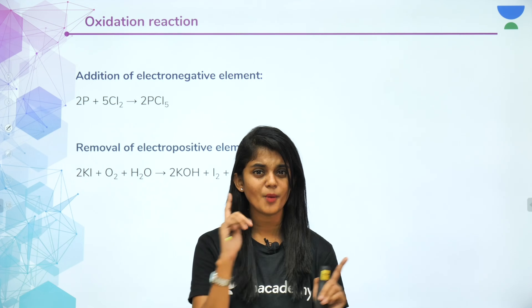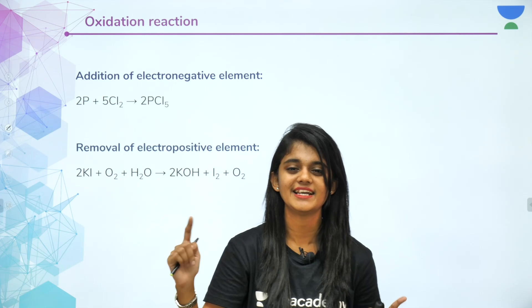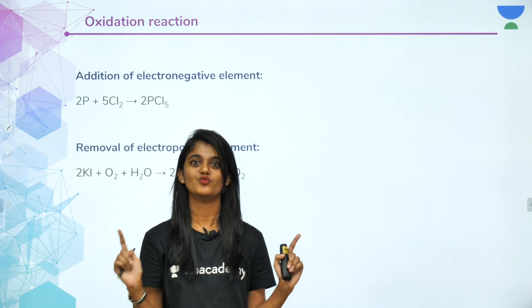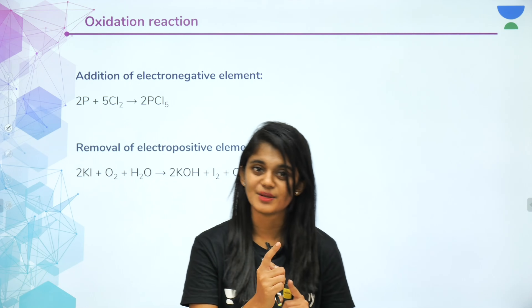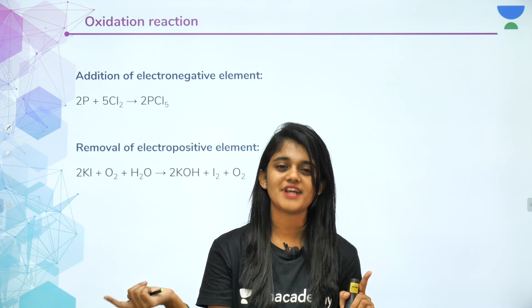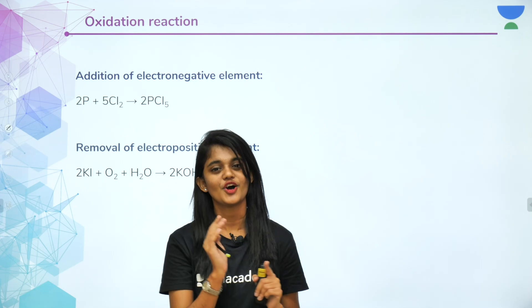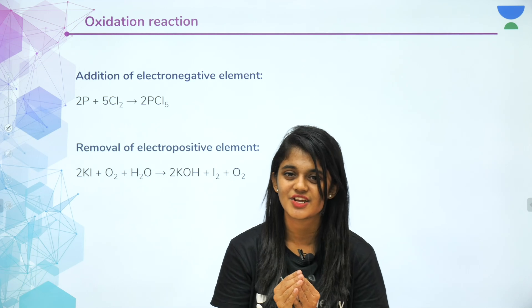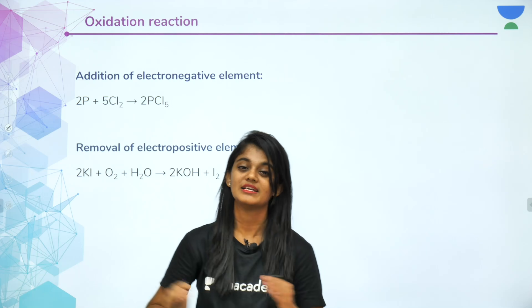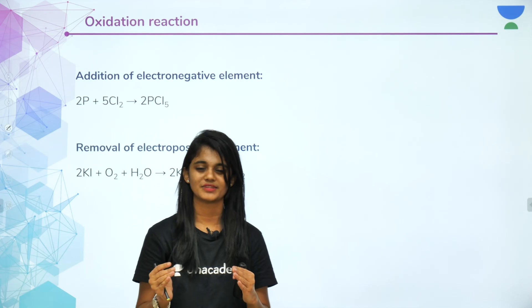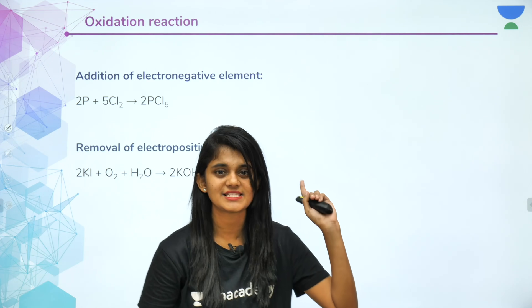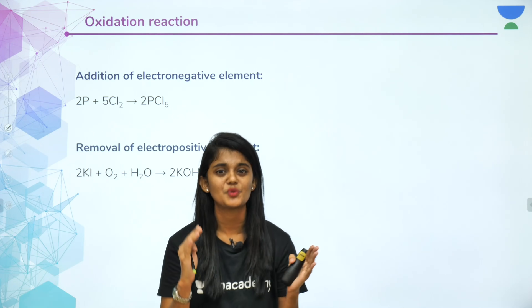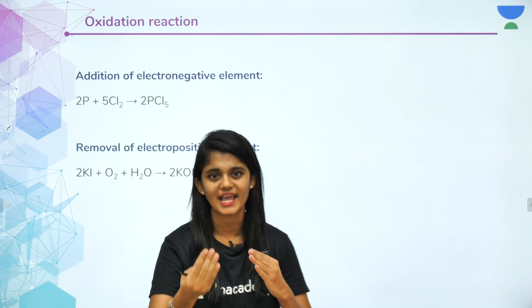The third definition, which I said consistently holds good for all chemical reactions: oxidation is nothing but removal of electron, and reduction is nothing but addition of electron. This third definition applies the same logic across all chemical reactions. There was some confusion about how addition of an electronegative element also counts as oxidation — so today I have come with examples.